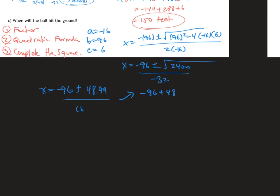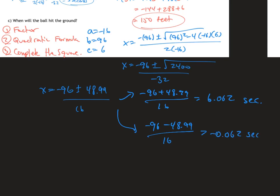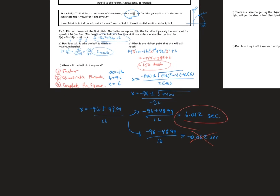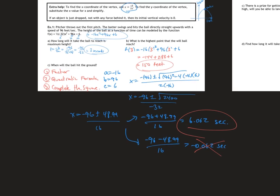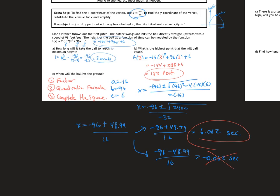I do negative 96 plus 48.99 over negative 32 and negative 96 minus 48.99 over negative 32. The plus gives me 6.062 seconds and the minus gives me negative 0.062 seconds. We cannot have a negative time, so that gets thrown out. The ball will land on the ground after 6.062 seconds. Make sure your answer makes sense — for a baseball hit, about six seconds to hit the ground is logical.